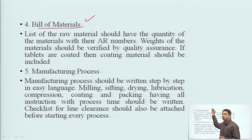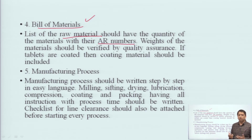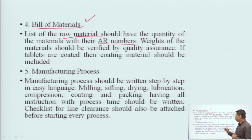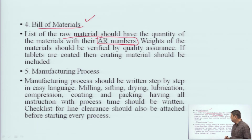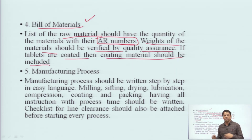The fourth part is the Bills of Material. All bills of material are attached here. Different types of raw materials should have their quantities listed with their analytical reference numbers. Every raw material — and raw material doesn't necessarily have to be in the end product, it may be consumed in between — all raw materials and their AR (Analytical Reference) numbers are recorded here. Their weights are verified by Quality Assurance. If tablets are coated, then the coating material should also be included and mentioned here.